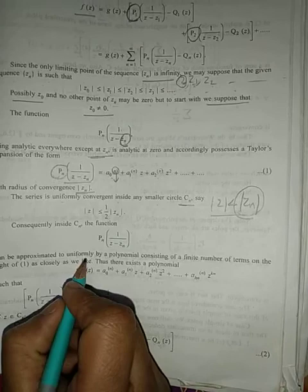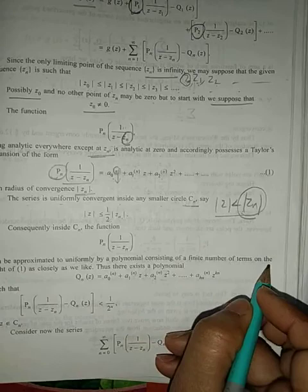So consequently inside Cₙ the function can be approximated uniformly by a polynomial consisting of a finite number of terms and so there exist a polynomial qₙ that consists of finite number of terms such that |pₙ(1/(z-zₙ)) - qₙ| < 1/2ⁿ.